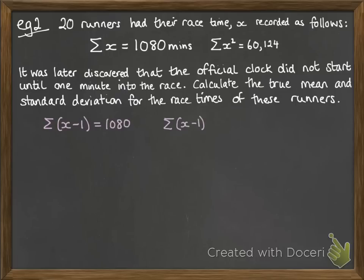So what we've actually been told about is x minus 1, because they've had their race recorded as one minute too short. It should have started a minute sooner. So those numbers above aren't really the sum of x. They're the sum of x minus 1, and the sum of x minus 1 squared. So we rewrite that.